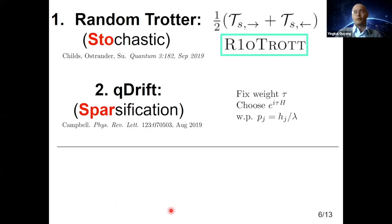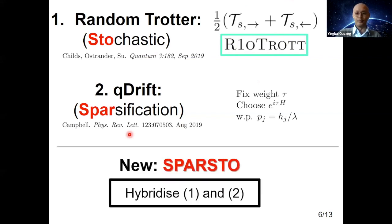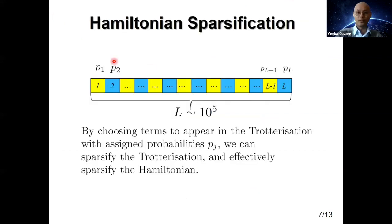Now we are faced with two different trotterization algorithms. One is a stochastic map where you do forwards trotterization with some probability and backwards with some probability. The other is a sparsification approach where one tries to greatly reduce the number of terms used in each Trotter step. The idea is to hybridize these two approaches. We call this algorithm SparSto because spars is from sparsification and sto is from stochastic.